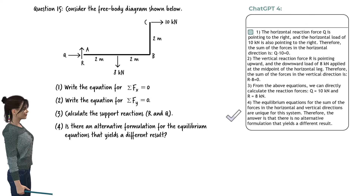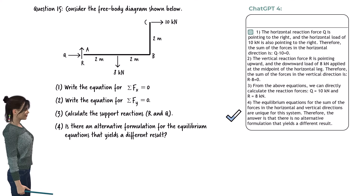ChatGPT gave the correct answer to the second question, but it made a sign mistake writing the first equilibrium equation, and more significantly, made a fundamental error in responding to the fourth question. It failed to recognize that the frame is unstable and that the static equilibrium equations do not have a unique solution.